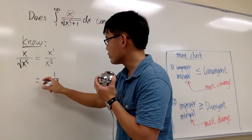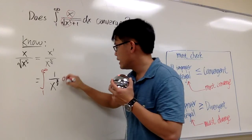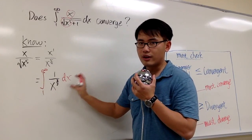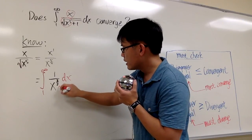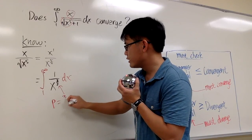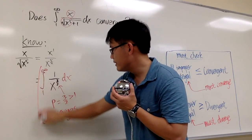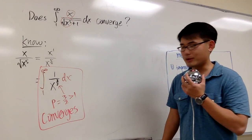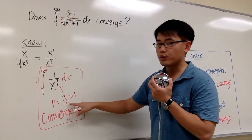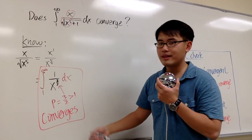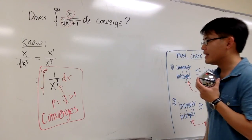Now I still need to use an improper integral, so I want to set one up going from 1 to infinity of 1 over x to the 3/2 dx. Does this converge? This is in the form of the p-integral — 1 over x to the p. The p value here is 3/2, which is greater than 1, so this integral converges. This is the piece of information we want to use. Whenever you have a p-integral, if p is greater than 1 it converges; if p is less than or equal to 1, it diverges.